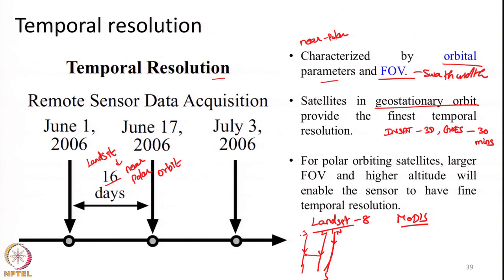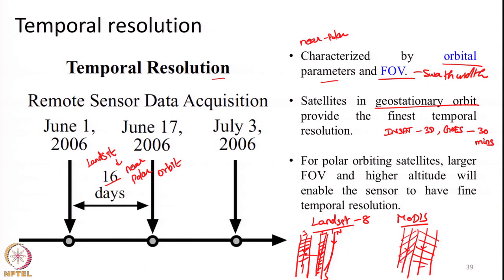Let us say the swath is just 185 kilometers for Landsat — you can see from this schematic that there exists a large gap between two orbital paths and the swath width covered. On the other hand, for MODIS the orbit will look more or less the same, but due to its very wide swath of around 2300 kilometers, the swath of one orbit can overlap with the next. Essentially, due to its wide swath width, MODIS can cover the land mass almost up to the next orbit.